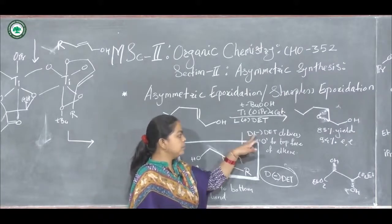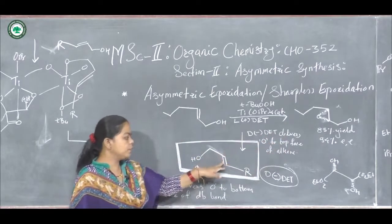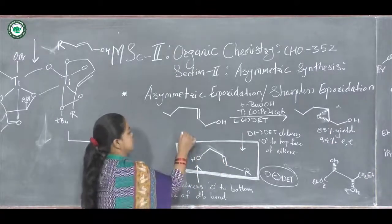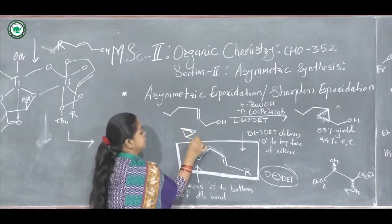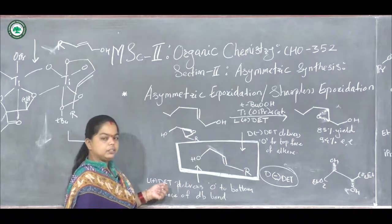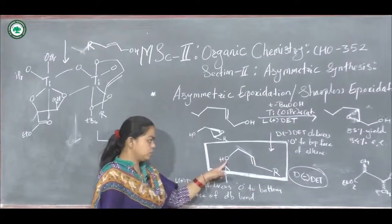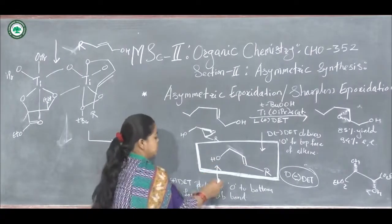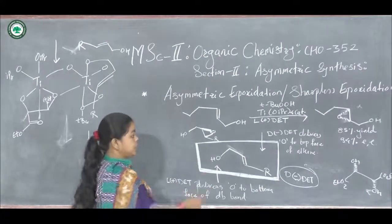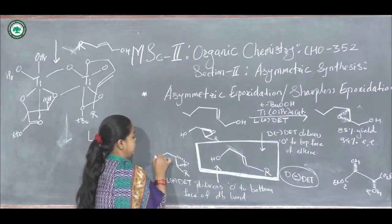When D-minus diethyl tartarate is used as the chiral ligand, it delivers oxygen on the top face of the double bond, giving beta-oriented epoxide. When L-plus diethyl tartarate is used, it delivers oxygen from the bottom side of the double bond, giving alpha-oriented epoxide.